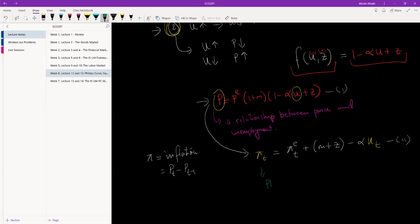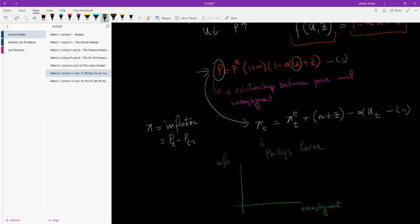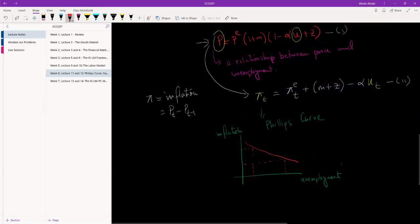This is the Phillips curve. This is the relationship. If we were to draw this, we have unemployment here and we have inflation here. What we are going to see is a relationship like this. When unemployment is low, inflation is high, and when unemployment is high, inflation is much lower.